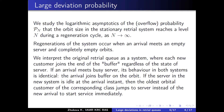Our interest is the asymptotic of the probability that the orbit size — the number of customers in the orbit — will reach some level n during a regeneration cycle, as n goes to infinity. Regeneration in our system occurs when an arrival meets the empty system, meaning no customers on the server and on each of the orbits.